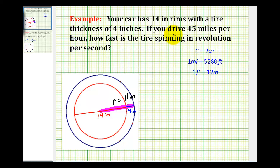Now it says if you drive 45 miles per hour, how fast is the tire spinning in revolutions per second? So right away, we're going to have to convert hours into seconds, and we'll also have to convert miles into inches because our radius is in inches.